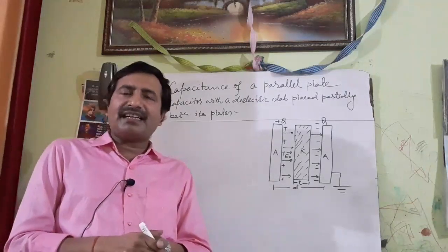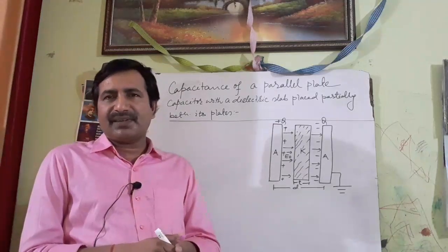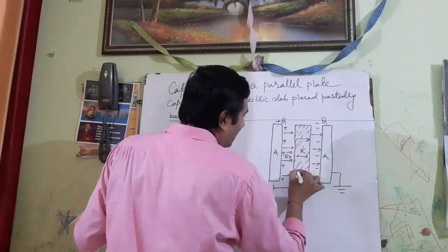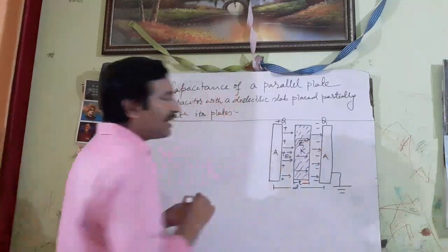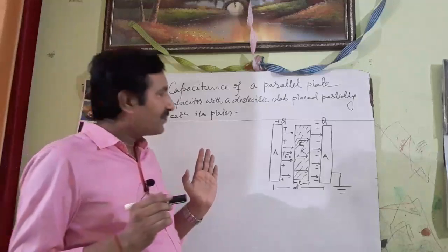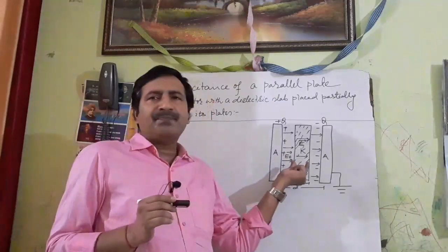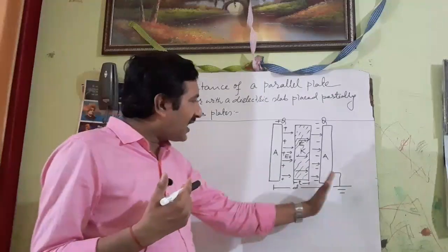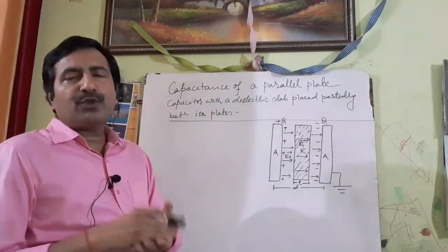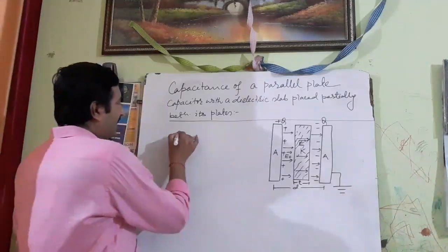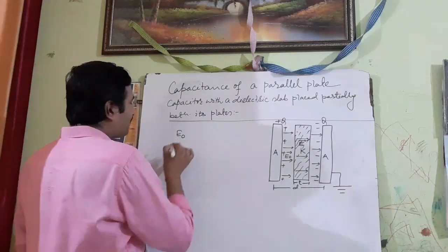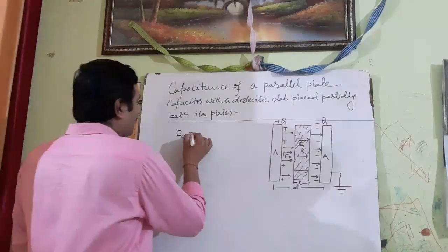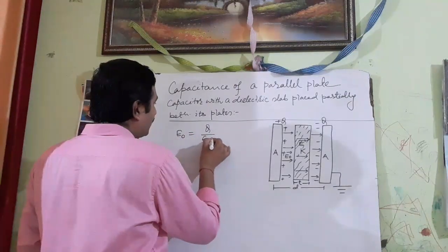This induced field is somehow less than the electric field in free space. Hence we observe a net electric field E inside the dielectric slab, which is somehow less than the electric field in free space. The electric field in free space is E₀, and it is equal to Q by ε₀A.